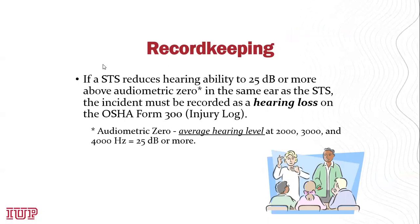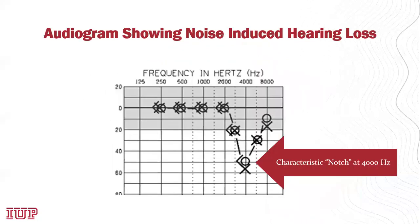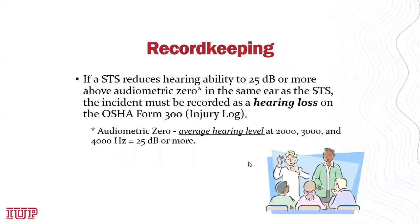Regarding record keeping: a standard threshold shift that reduces hearing ability to 25 decibels or more above audiometric zero in the same ear must be recorded as a hearing loss on the OSHA 300 log. Audiometric zero is the average hearing level at 2,000, 3,000, and 4,000 hertz, so it would have to average 25 decibels at those three frequencies and include a standard threshold shift as defined earlier before it meets the criteria for being recordable.